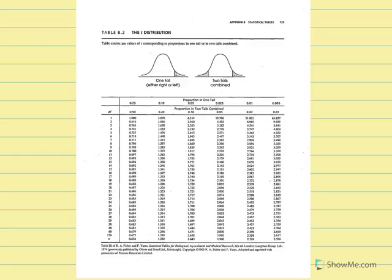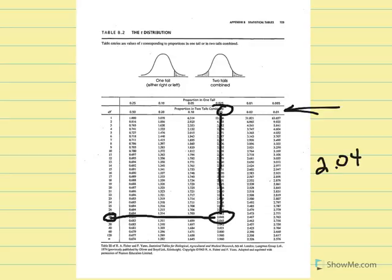In our t-distribution, with degrees of freedom equal to 28 and a two-tailed test at 5%, we find where those two values intersect. We get a critical t equal to plus or minus 2.048, because of the two-tailed test. We're going to use that to draw our conclusion.